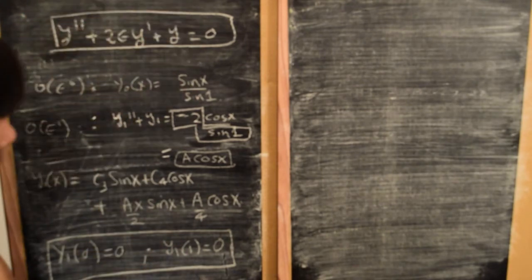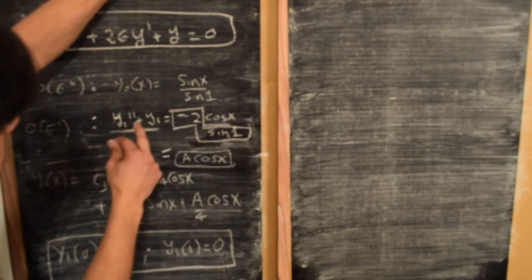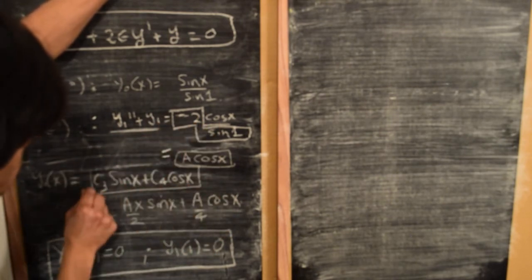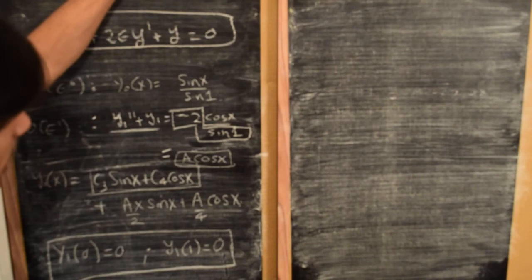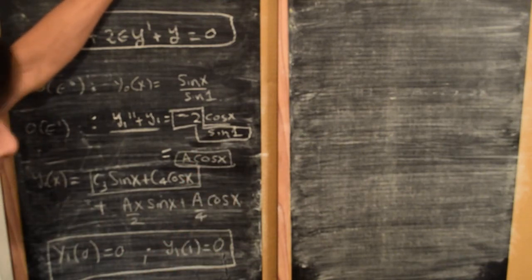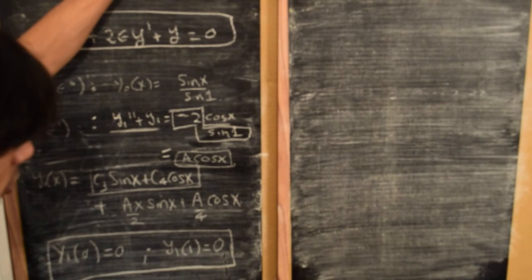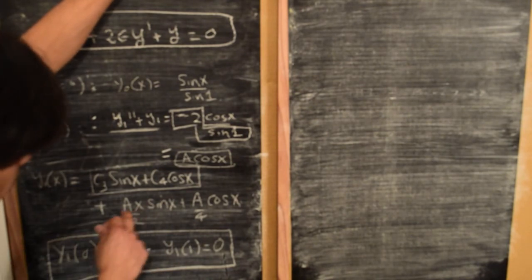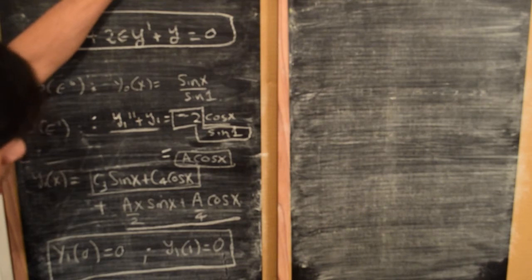This is a linear second-order differential equation subject to a forcing, so its overall solution has two components. The homogeneous solution is obtained by setting the forcing to zero, giving y_1'' + y_1 = 0, which yields c_3·sin(x) + c_4·cos(x), where c_3 and c_4 are undetermined constants. The particular solution comes from the forcing itself. In part 2, we used variation of parameters to find the particular solution: (A·x/2)·sin(x) + (A/4)·cos(x).